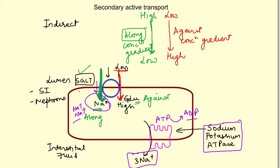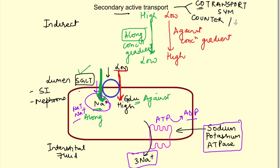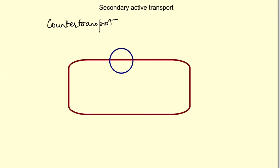Secondary active transport is of two types: co-transport, also known as symport, and counter transport, also known as antiport. In symport, both substances move in the same direction — one against its concentration gradient and one along its concentration gradient. For example, in SGLT both sodium and glucose are moving from outside to inside.